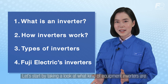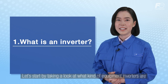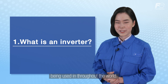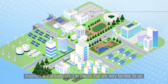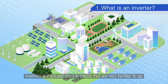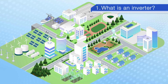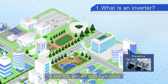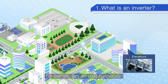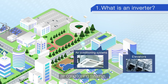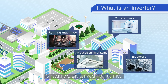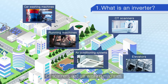Let's start by taking a look at what kind of equipment inverters are being used in throughout the world. Inverters are actually used in places that are very familiar to us. For example, they are used in elevators, air conditioning systems, running machines, CT scanners, and car washing machines.